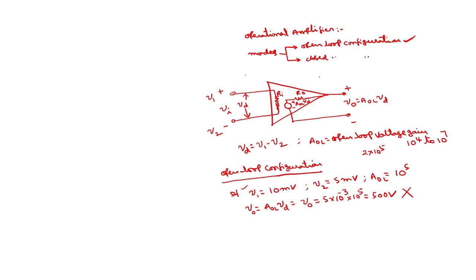The maximum voltage at the output of the operational amplifier is called the saturation voltage, which equals the power supply voltage. If the supply is +Vcc and -Vcc, whatever output voltage is greater than Vcc will saturate to Vcc only. This is what is called the saturation voltage.